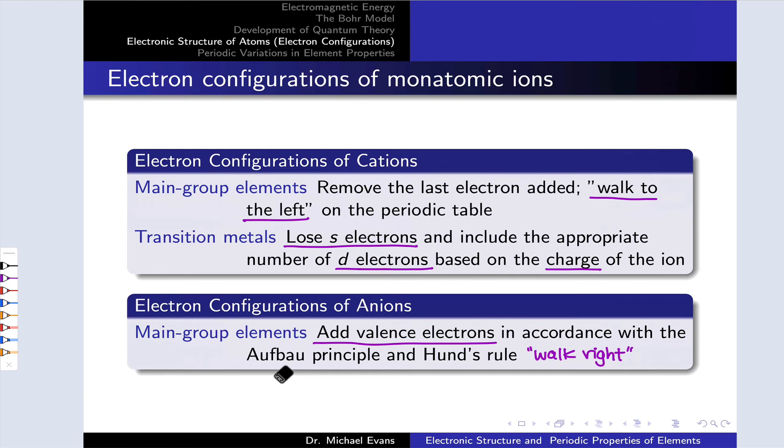As you practice with this, the thing you'll realize is that most cations and anions of main group elements have electron configurations that correspond to the configuration of the closest noble gas with a completely full valence shell. There's a good reason for that. Elements and atoms tend to want to obtain those full valence shell configurations to form relatively stable cations and anions.